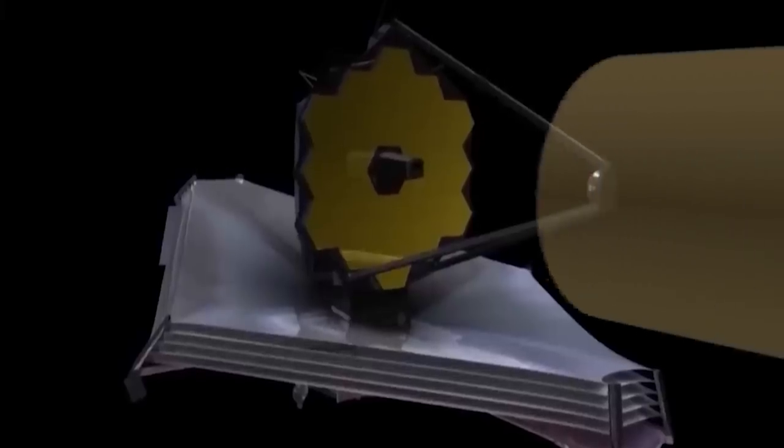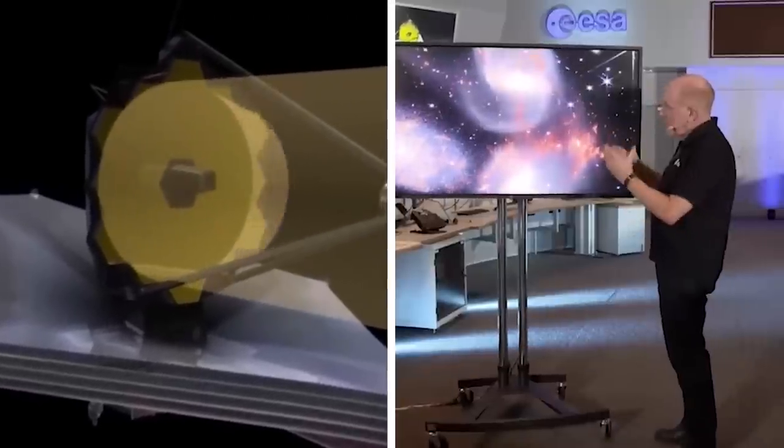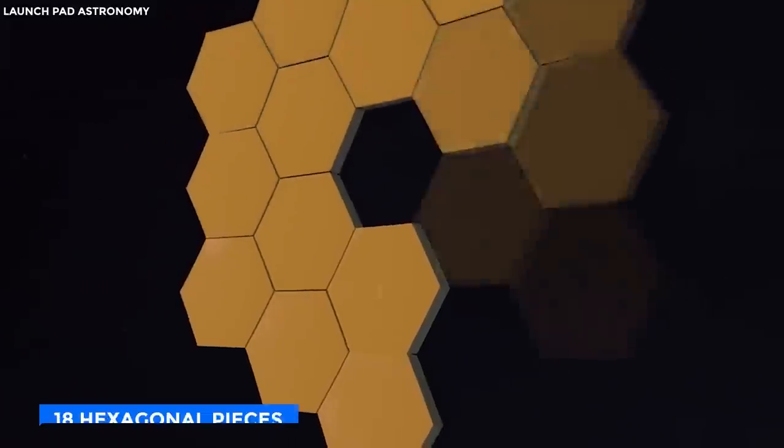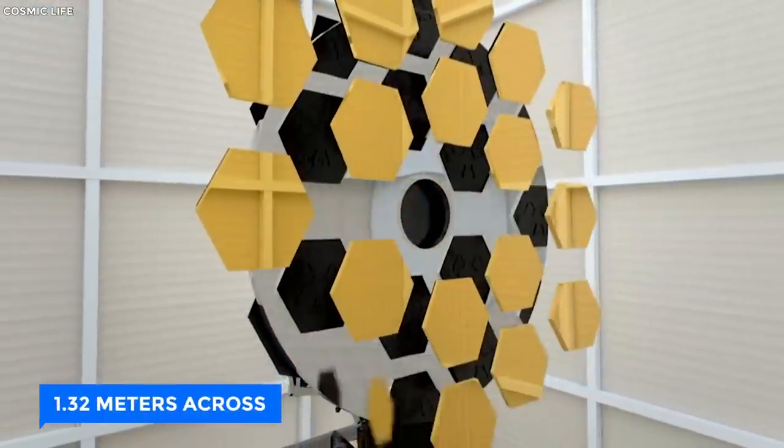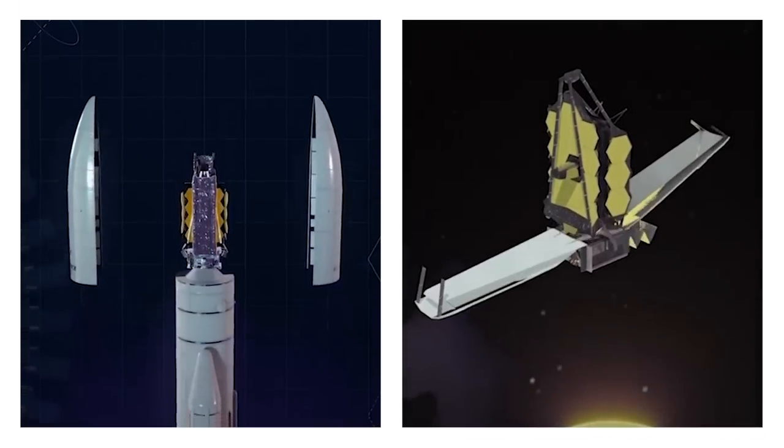With its enormous mirror, capturing more light equals sharper images. The mirror consists of 18 hexagonal pieces, each 1.32 meters across. It's folded on Earth, then opened in space.